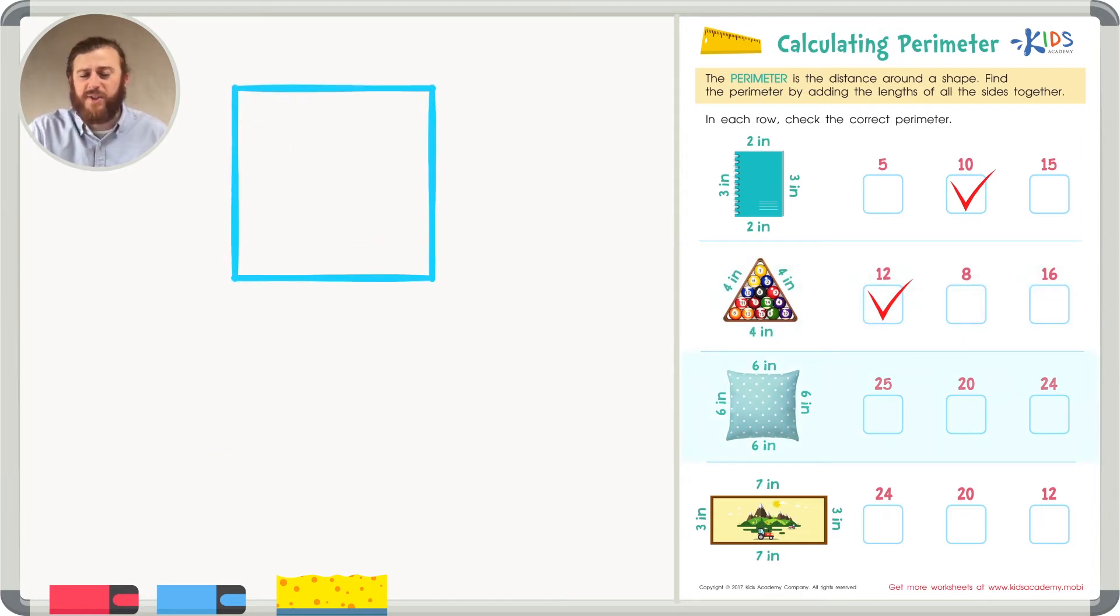In this problem, we have a square. In a square, we know all sides are equal. In this square, each side happens to be six inches. Instead of adding all the sixes together at once, let's do it one at a time.